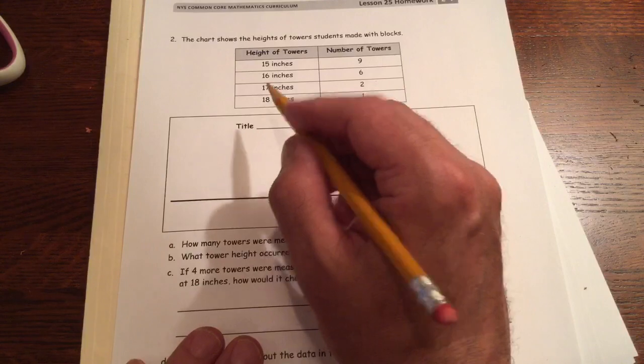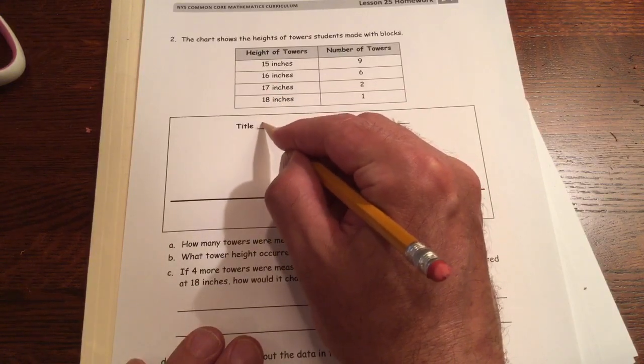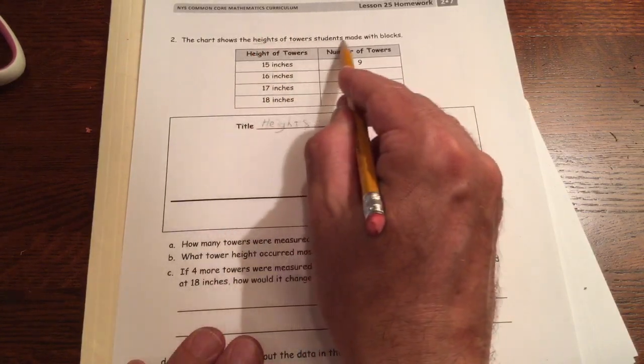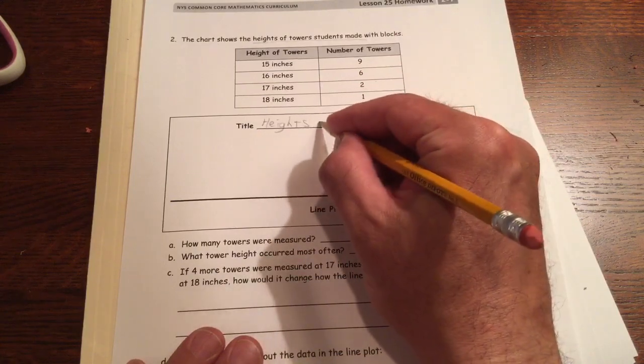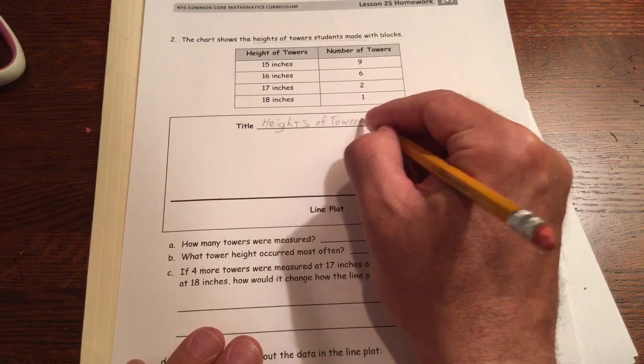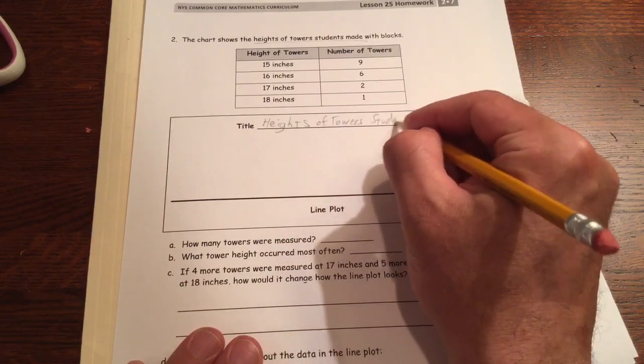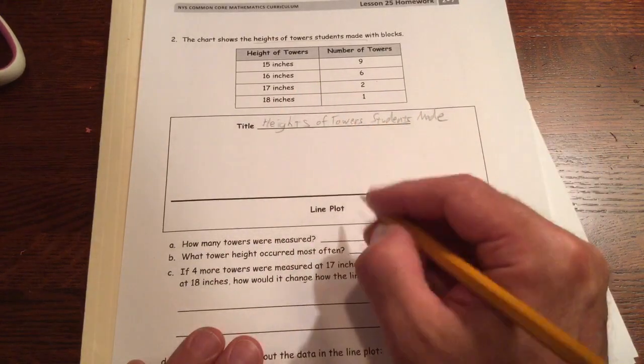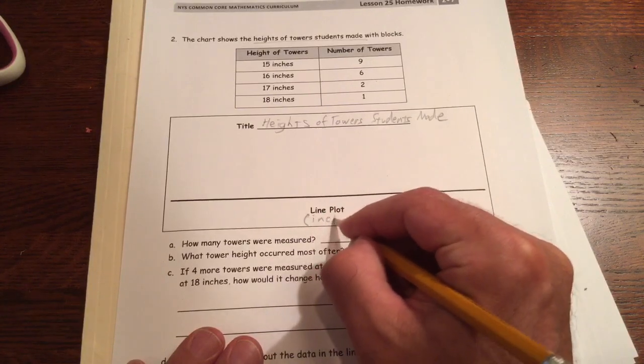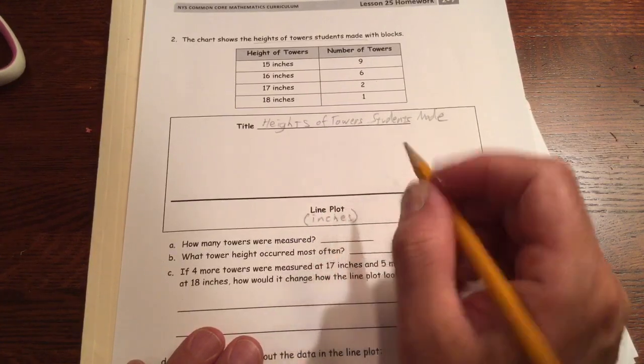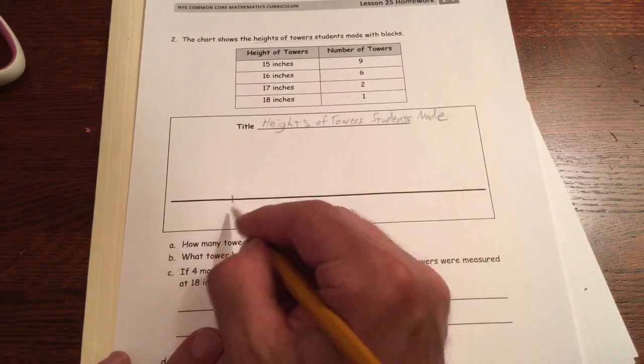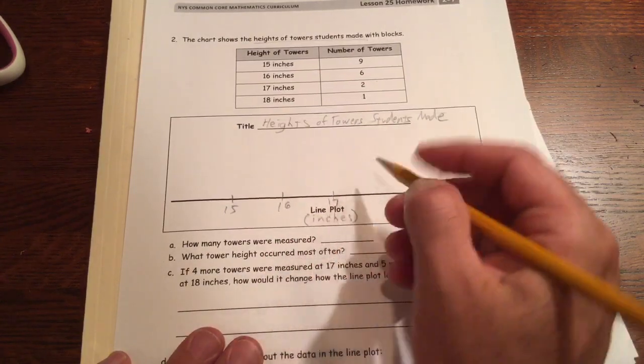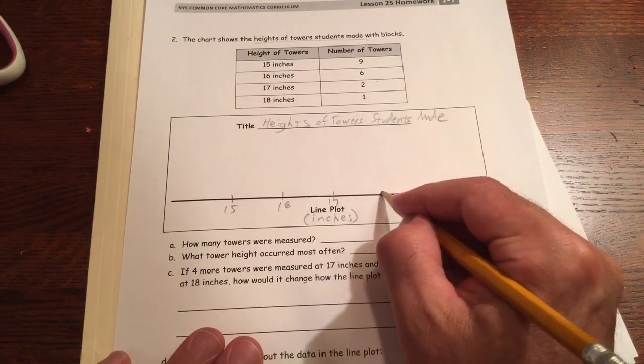So we'll say for our title, heights of towers students made. And the line plot, this is in inches. So I'm going to say here, inches. And we've got 15, 16, 17, and 18.